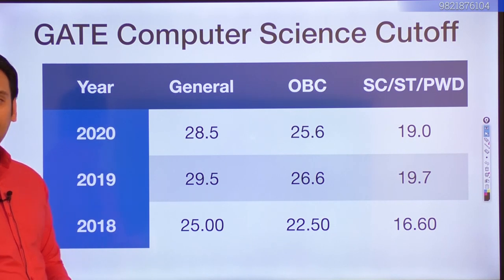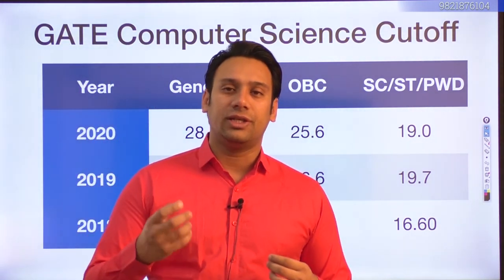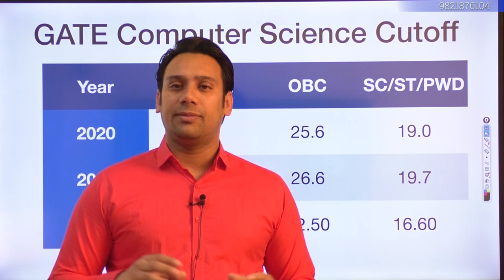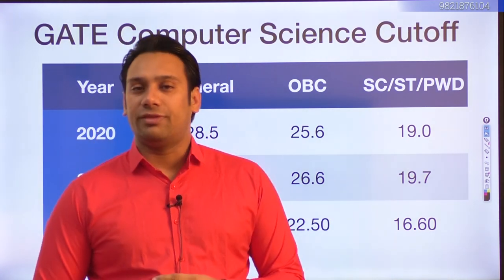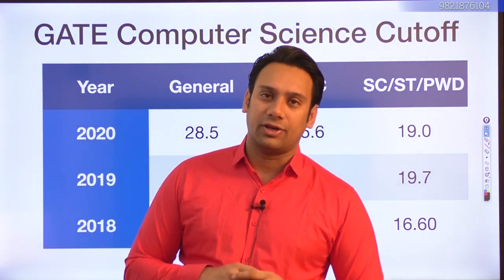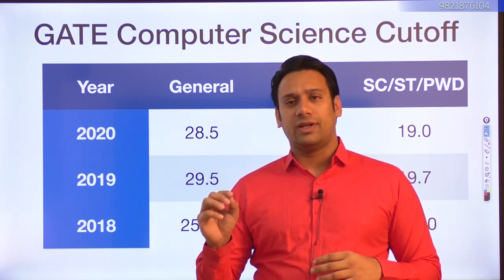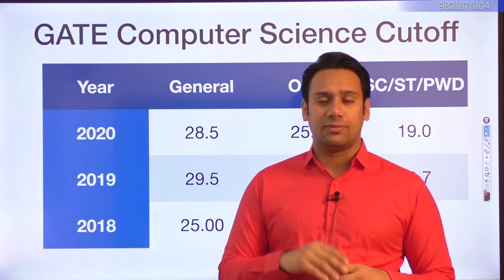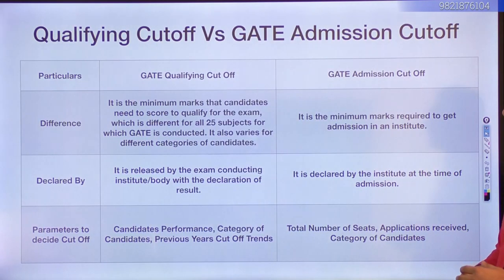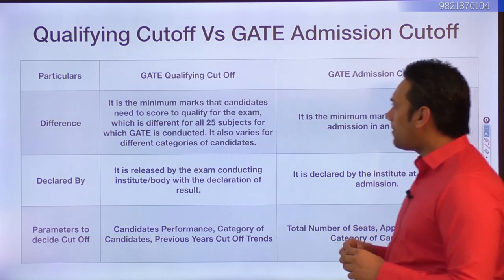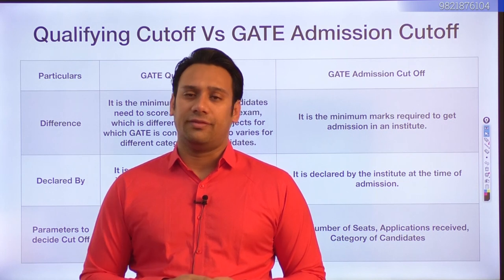Just qualifying the GATE exam is not enough. These cutoff marks only tell you that you are GATE qualified. Approximately only 16 to 17 percent of people who apply are able to qualify. Out of roughly 1 lakh candidates who apply for GATE computer science, only 16 percent clear the cutoff. There are two different things: the GATE cutoff and the GATE admission cutoff — these are very different.